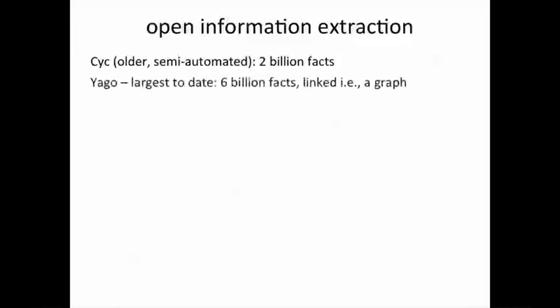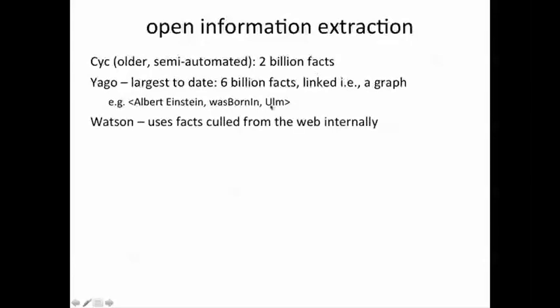This whole exercise of learning from the web is called information extraction or open information extraction, and there are many examples of such efforts. One of the oldest efforts is called Cyc, the semi-automated technique, and has so far accumulated about 2 billion such facts. Yago is more recent and is the largest to date. It's run out of the Max Planck Institute in Germany, and has uncovered more than 6 billion facts, and they're all linked together as a graph. Albert Einstein was born in Ulm, for example, is a fact that Watson could have learned from a database like Yago, and Watson actually uses facts culled from the web internally. It doesn't use Yago or Cyc, but it uses many web pages and textual documents and rules, and this is another example of open information extraction.